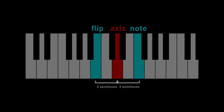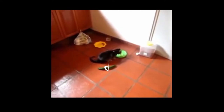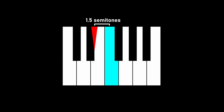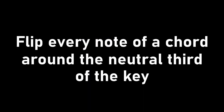Negative harmony involves flipping around the axis of the neutral third. The neutral third is right in between the major third and minor third. It's a quarter tone, but don't let that phase you — the logic hasn't changed a bit. In C major, the neutral third is E half flat, right between the major third of E and the minor third of E flat. Say we wanted to flip F around that neutral third. F is one and a half semitones above E half flat, so we go one and a half semitones below, to D. Flip every note of a chord around the neutral third of the key, and voila — negative harmony.